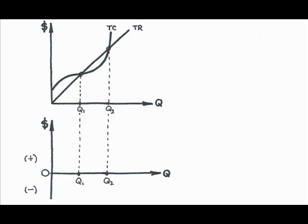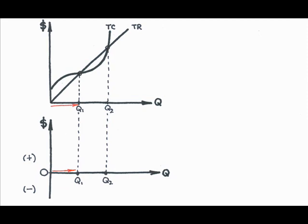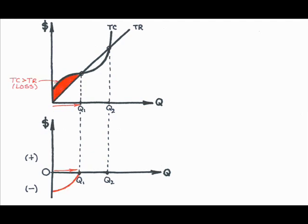What about output levels from 0 up to Q1? Because total cost is higher than total revenue at these levels of output, there are losses in this range. Do losses occur anywhere else? Look to the far right, beyond output level Q2. Again, total cost is greater than total revenue, so there are losses.